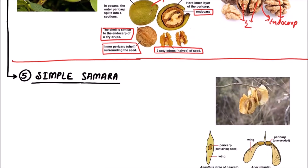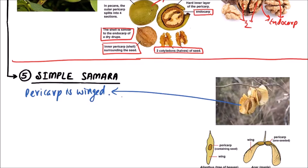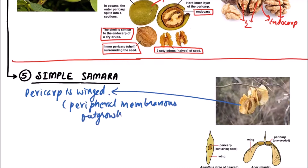The last type of achenial fruit is simple samara. In simple samara, the pericarp is winged. These wings are basically peripheral membranous outgrowths for dispersal. We can observe that these wings are helpful in dispersal, and this is the single seed inside.